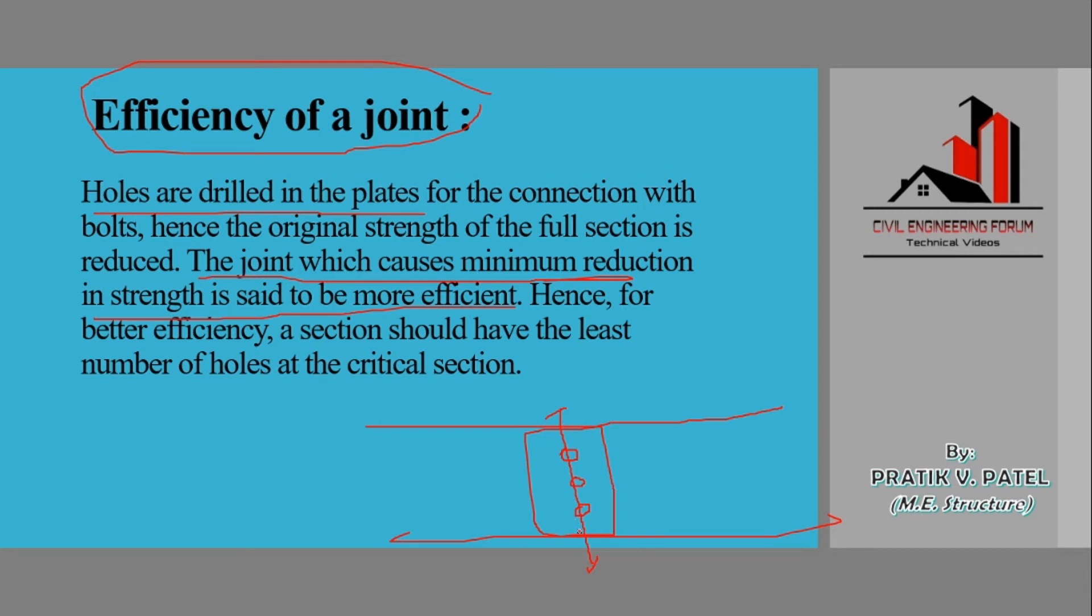Hence, for the better efficiency, a section should have the least number of holes at the critical section. So here we saw that three bolt holes are provided and the failure plane is generated. But if we can provide only two bolts or even one, then it can increase the efficiency of that joint. The efficiency of this joint can be increased by decreasing the number of bolt holes.